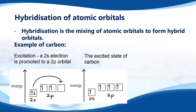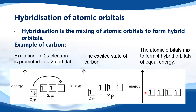In the excited state we have a 2s and three 2p orbitals each with one electron. As you know, carbon is able to form 4 identical covalent bonds in methane. However, according to the excited state, if it were to form 4 bonds they would not be identical, because the 2p orbitals are of higher energy than the 2s orbital. So to account for those 4 identical bonds in methane, we have hybridization of atomic orbitals, where the atomic orbitals mix to form 4 hybrid orbitals of equal energy, explaining why carbon forms 4 identical covalent bonds.